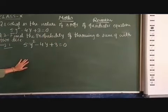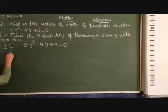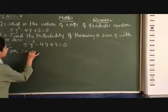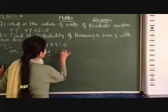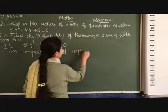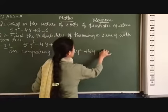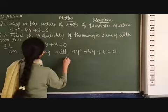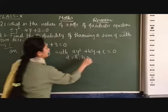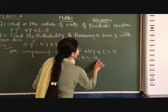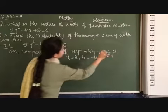Now here we have to determine the nature of roots. So for that, first of all, we will find the coefficients of the variable. So on comparing with ay² + by + c = 0, we have a = 5, b = -4, and c = 3.